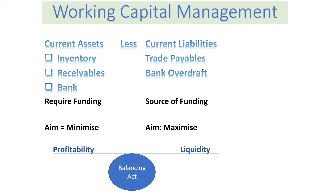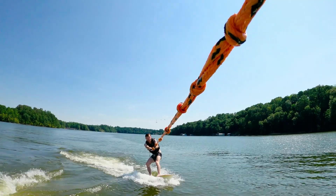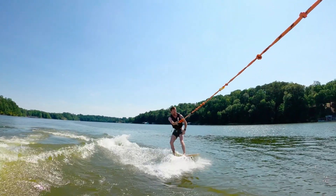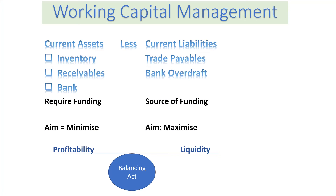So we want to minimize our current assets to reduce our cost and increase our profitability. But we need to have sufficient current assets in order to be able to pay our trade payables. Whenever it comes to working capital management, it is always about a balancing act between profitability and liquidity.